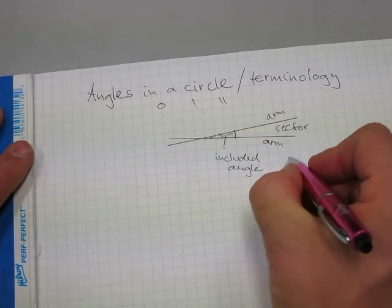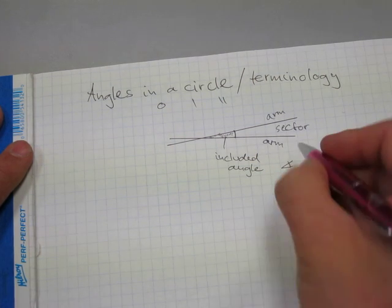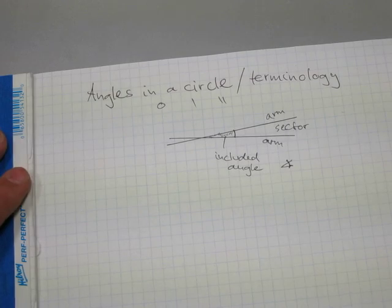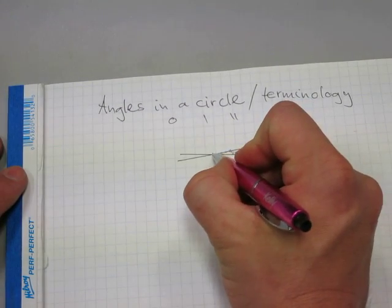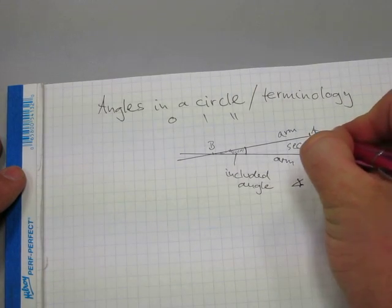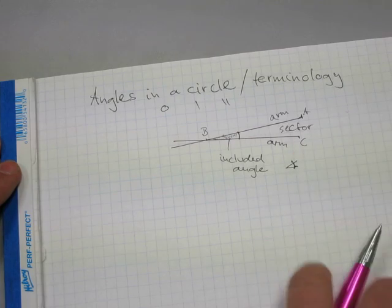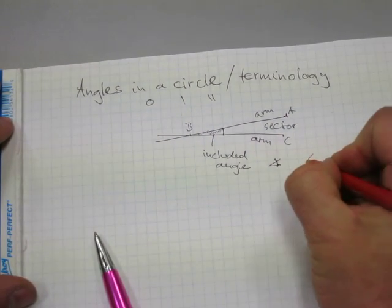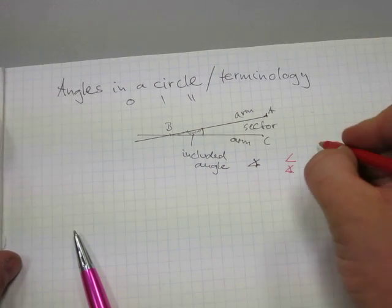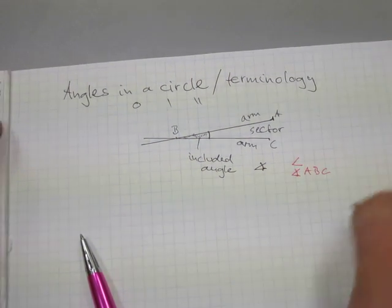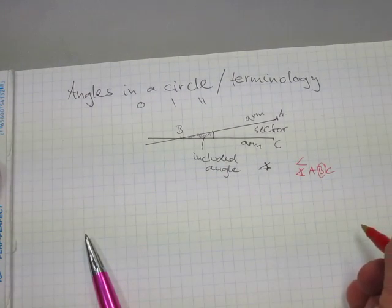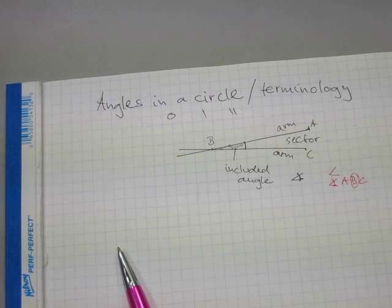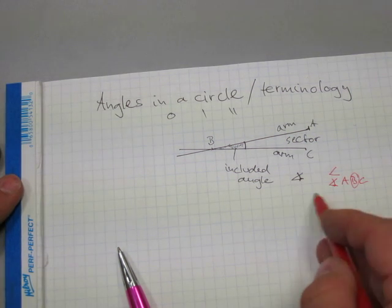Now, angles in writing are abbreviated like so, or like so with a little circular line across it. And if this one here is point B, and this one here is point A, and this one here is point C on a line segment, then the angle is written down as angle ABC. And the letter in the middle is showing where the apex of the angle is. So that's how angles are written down.